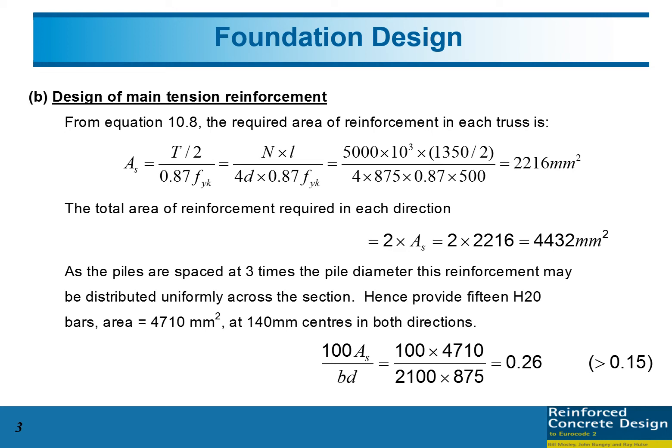The effective depth is 875mm, so from this we have 2216 square mm. This is the AS required for two piles.